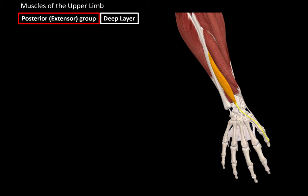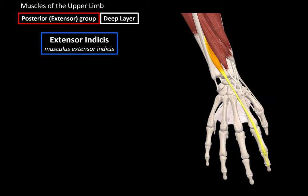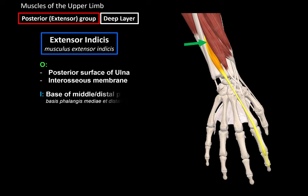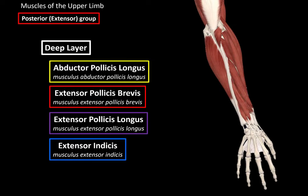The last deep layer muscle is the extensor indicis. It originates from the posterior surface of the ulna and the interosseous membrane — just like the extensor pollicis longus — and inserts at the base of the middle and distal phalanges of the index finger. Indicis means index finger, so its function is extension of the index finger, which is the second finger. That was all the deep muscles of the posterior group.